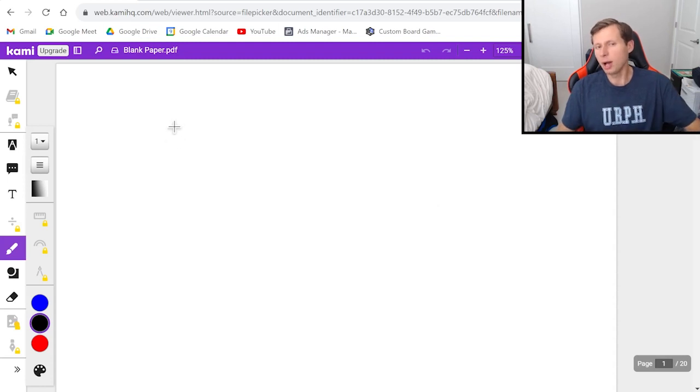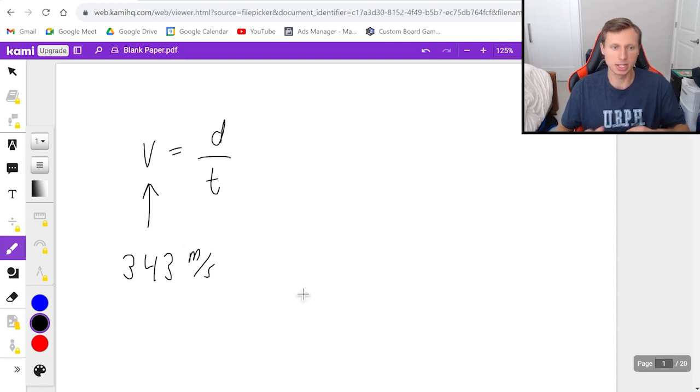Basically, any problem that uses the speed of sound and you want to know how long it takes for the sound to travel, you just say velocity equals distance over time. It's this simple equation. And for most of the time, we're going to assume the velocity of air, in other words the speed of sound, is 343 meters per second. That's what we're going to be plugging in for that velocity.